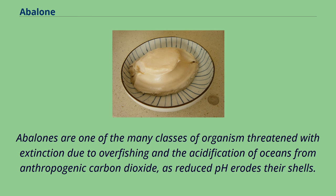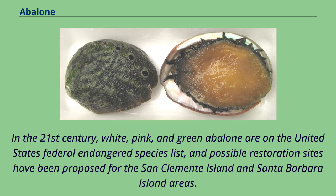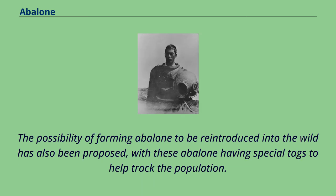Abalones are one of the many classes of organism threatened with extinction due to overfishing and the acidification of oceans from anthropogenic carbon dioxide, as reduced pH erodes their shells. In the 21st century, white, pink, and green abalone are on the United States' federal endangered species list, and possible restoration sites have been proposed for the San Clemente Island and Santa Barbara Island areas. The possibility of farming abalone to be reintroduced into the wild has also been proposed, with these abalone having special tags to help track the population.